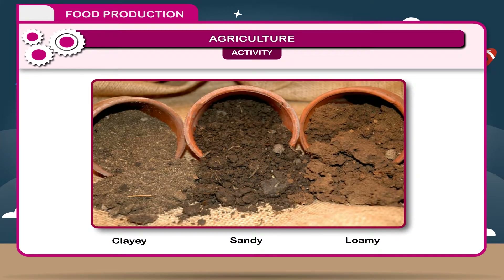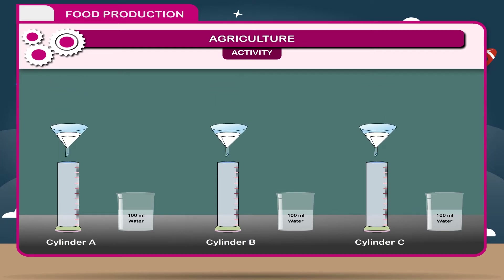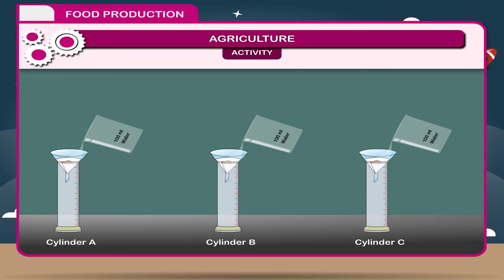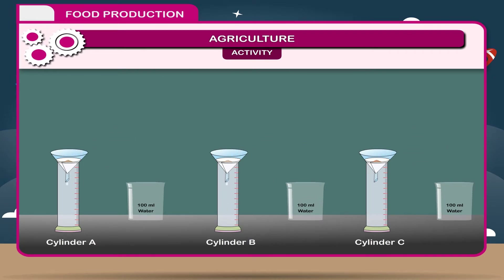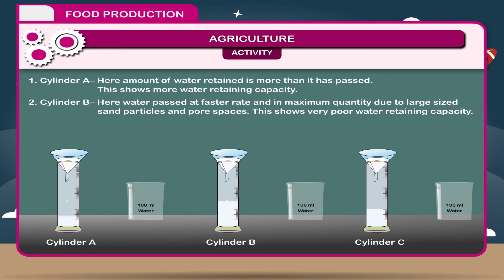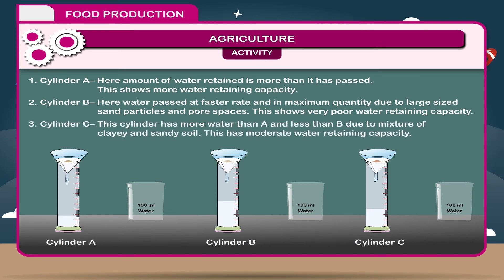Activity: Take three types of soil — clay, sandy, and loamy — in equal amounts in three different funnels over filter paper, and keep them over measuring cylinders as shown in the figure. Pour 100 ml of water in each funnel. Wait for about an hour and note the level of water in each cylinder. Results: 1. Cylinder A — amount of water retained is more than passed, showing more water retaining capacity. 2. Cylinder B — water passed at a faster rate and in maximum quantity due to large sand particles and pore spaces, showing very poor water retaining capacity. 3. Cylinder C — has more water than A and less than B due to the mixture of clay and sandy soil, showing moderate water retaining capacity.